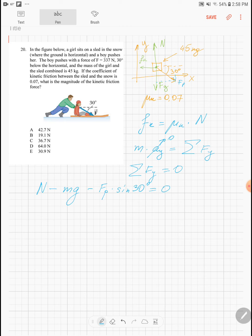And in the sum it is zero, so from here we can find the normal force. It will be m times g plus f push times sine of this 30 degrees.